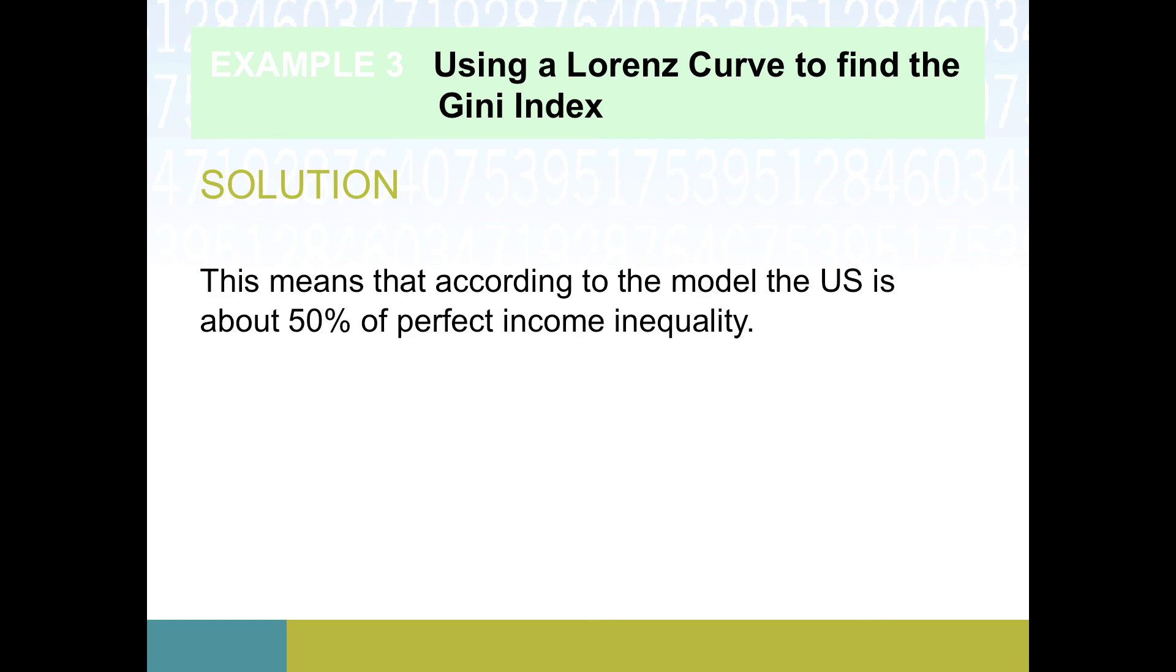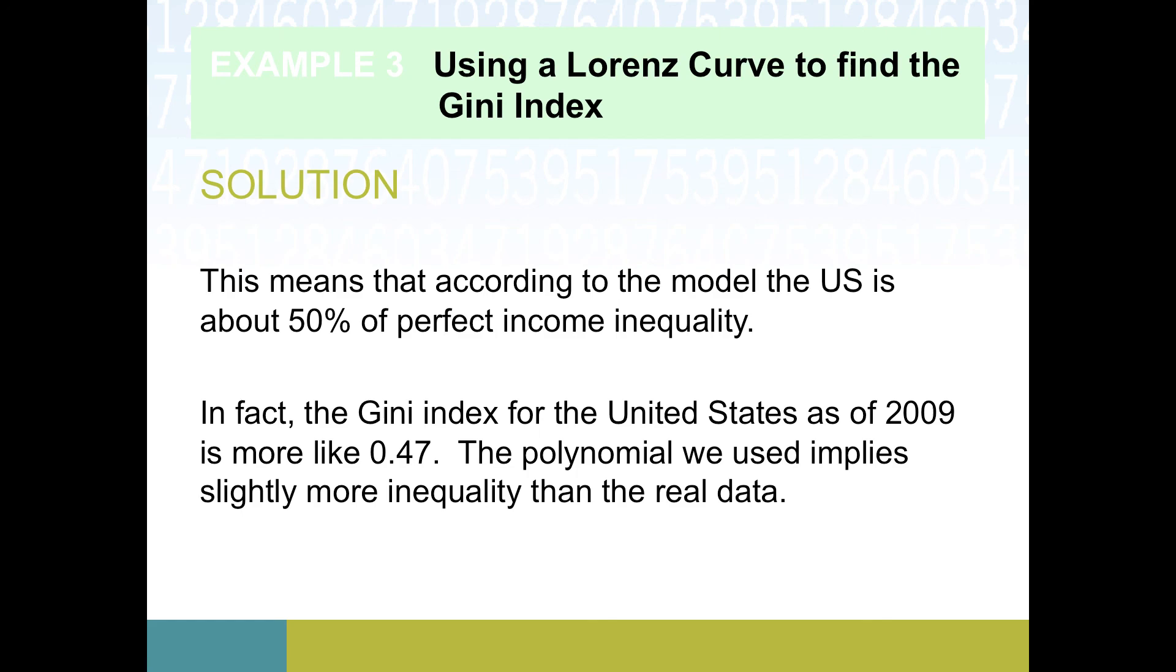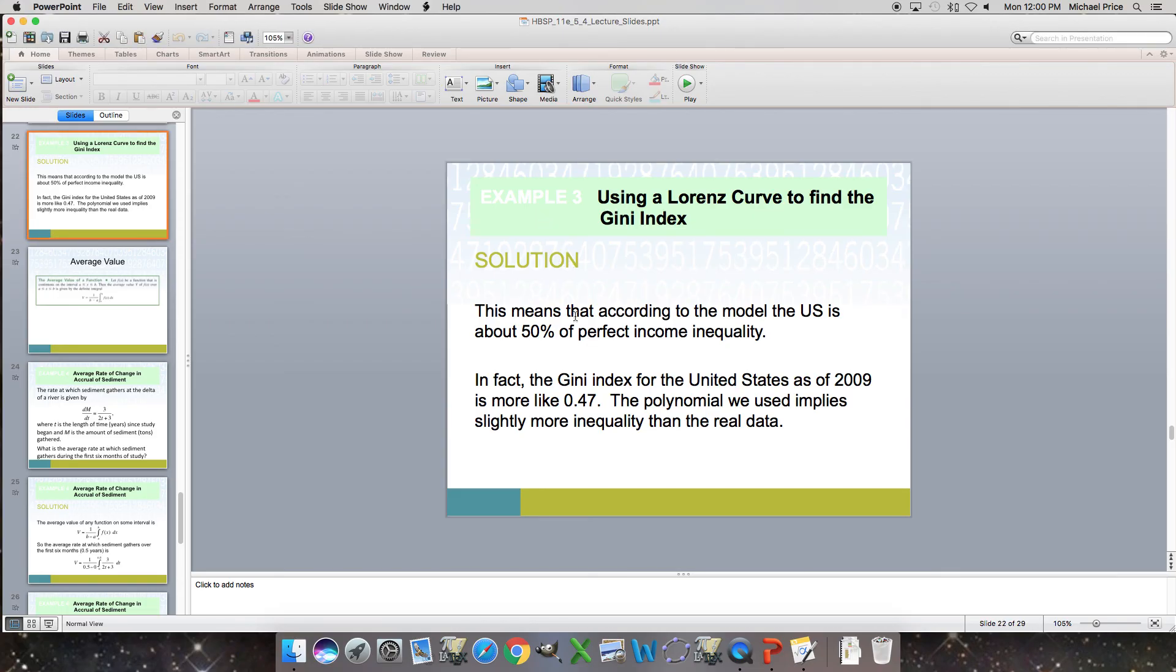I think it was 0.50 something else, but rounds to about 0.5. So interpreting that, the Gini index is a measure of inequality. This says looking across the whole spectrum of wage earners in the US, we're looking at 50% of the perfect income equality. So if we had 100% inequality, that would mean that basically nobody had any money except for one tyrant at the top of the food chain who had all of the money in the entire society. The other end of the spectrum would be 0% inequality. So 0% inequality would mean that everybody has the exact same amount of money and we'd be right along that line, y equals x. If we looked at the actual, I think the CIA world fact book gives us something like 0.47 for the Gini index for the United States. So our polynomial implied a little bit more inequality, but pretty close. So that does it for Lorenz curve, and we'll be back in the next section for talking about average value.